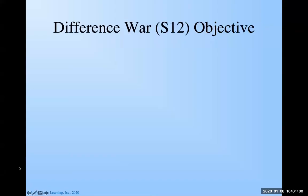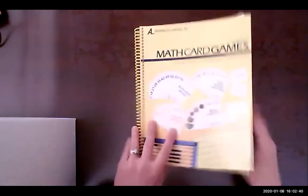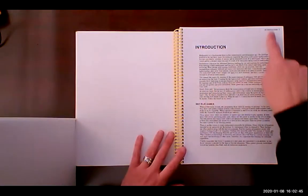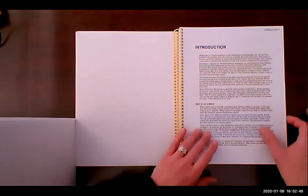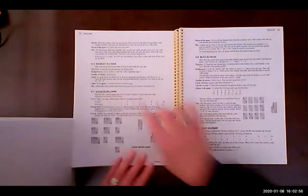All right, so we're going to do the Difference War, which is game S12 in the book. But before I get too much into the details, I want to show you something with the book real quick here. So here's the Math Card Games book, and we've got an introduction in the very beginning, and then if you look up at the top here, it will tell you what chapter you're in. So if I keep going, I've got Number Sense, and then I've got the next chapter is Addition.